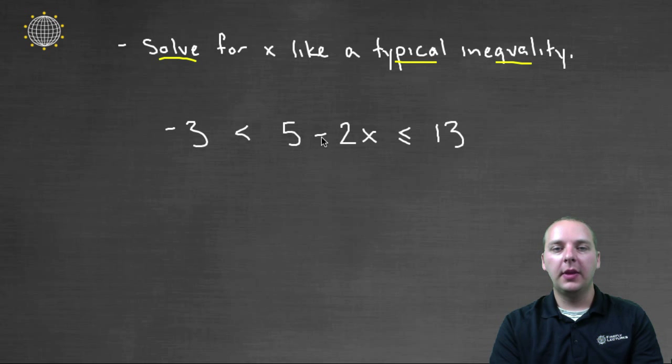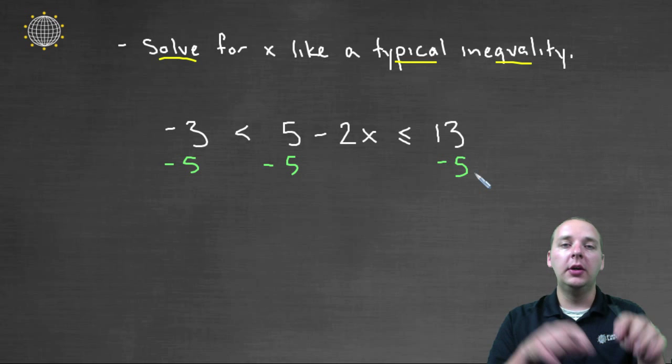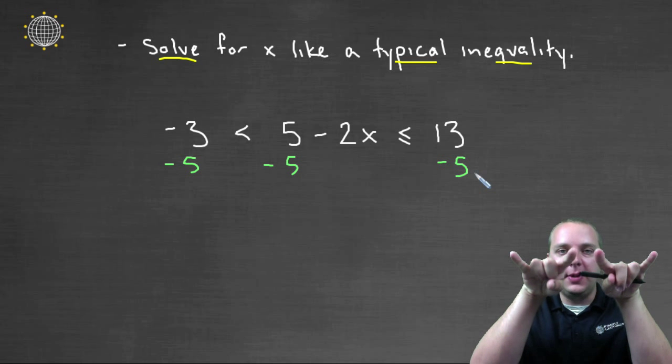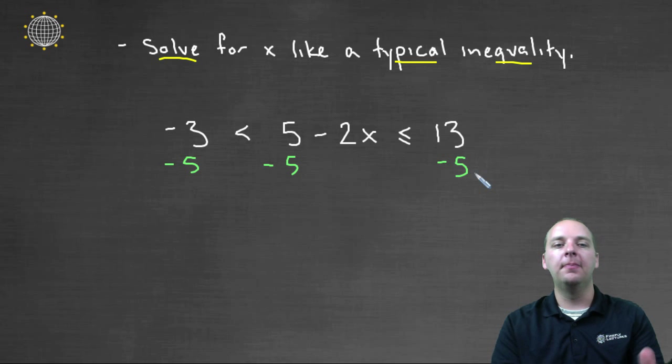So like for this example, to solve for x, first thing I would want to do is subtract 5. But I can't just subtract 5 from the middle, I would also have to subtract 5 from the left and from the right as well. So we're dropping all three pieces equivalently. So the left hand side would be -8. The middle, now that the five is gone, would be just -2x. And the right hand side would be less than or equal to 8.